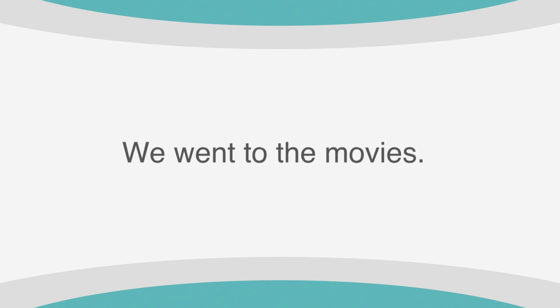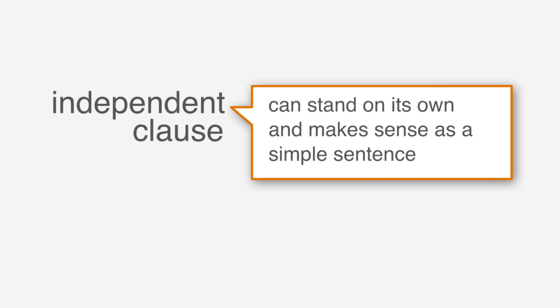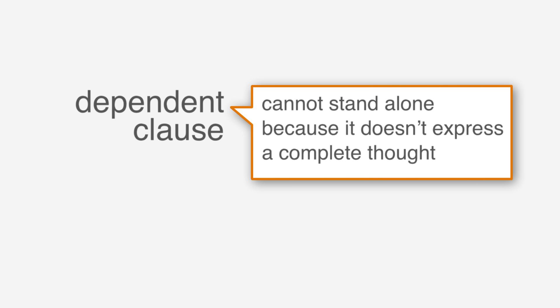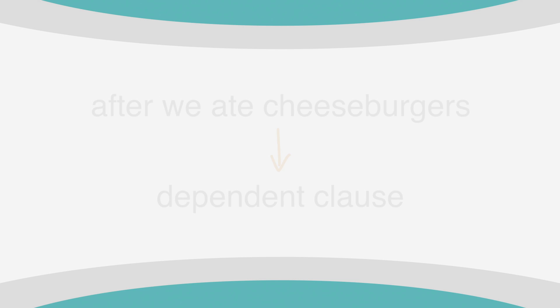An independent clause can stand on its own and make sense as a simple sentence. For example, 'we went to the movies' is an independent clause — it makes sense by itself and stands as a simple sentence. In contrast, a dependent clause cannot stand alone because it doesn't express a complete thought. For example, 'after we ate cheeseburgers' is a dependent clause — it doesn't make sense on its own and cannot stand as a sentence.